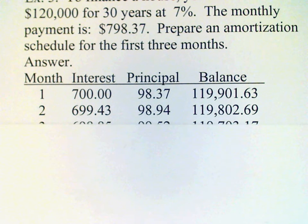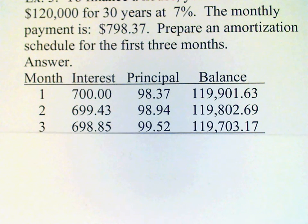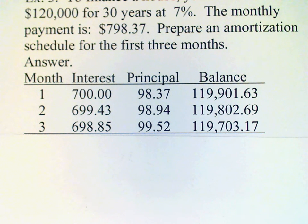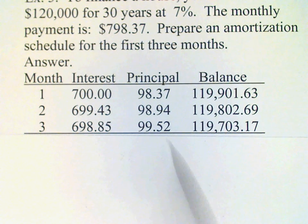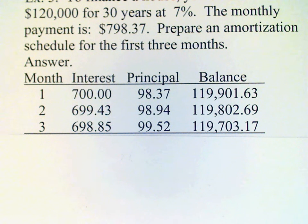We repeat the process for a third month. You can see the interest is going down gradually each month, and the amount of principal we repay increases gradually each month. And so there's the amortization schedule for this loan after three months.